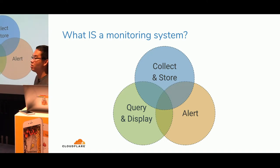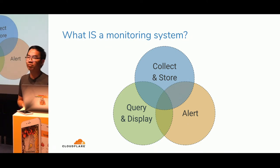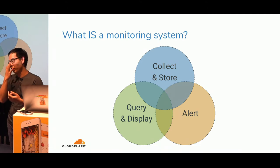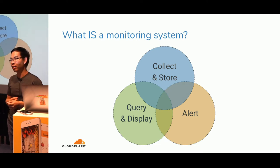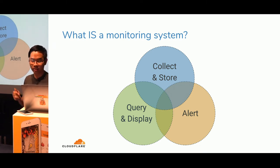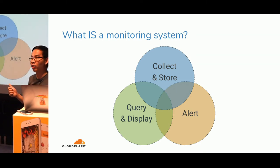What is a monitoring system? There are three main components. First, it needs to collect and store metrics. Second, with those metrics you need to be able to query and visualize them. Third, you need alerting — sending notifications to people, via email, or creating a Jira ticket. Some monitoring systems do only one of these — like Nagios, which mostly only does alerting — but a good monitoring system should have all three.